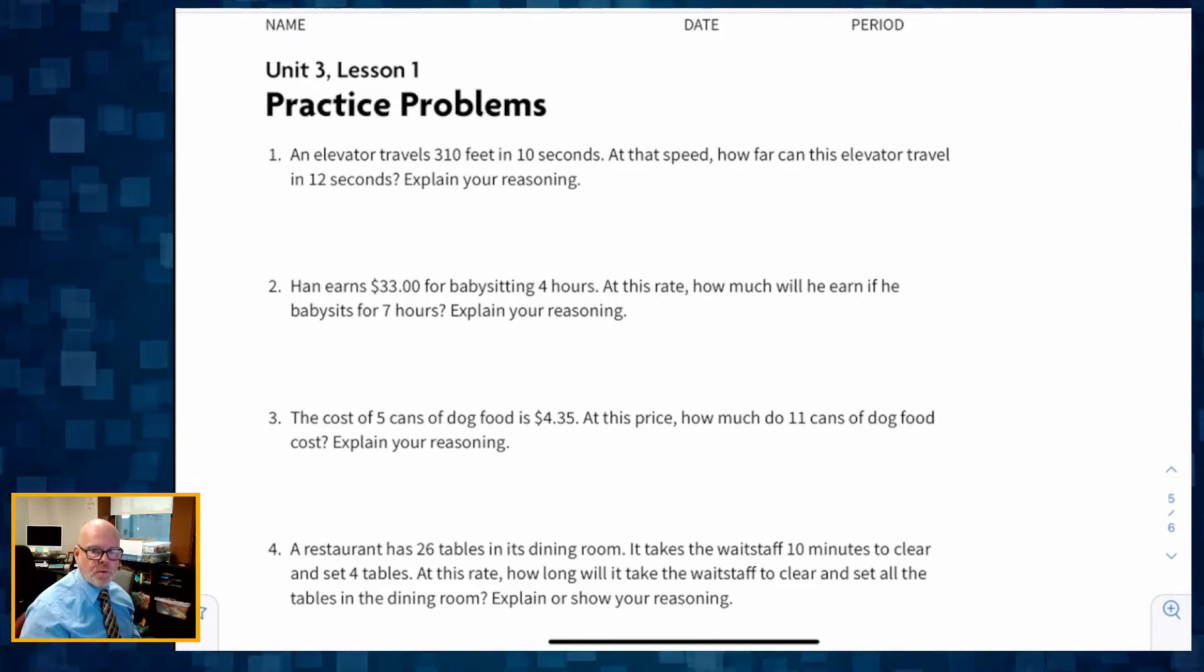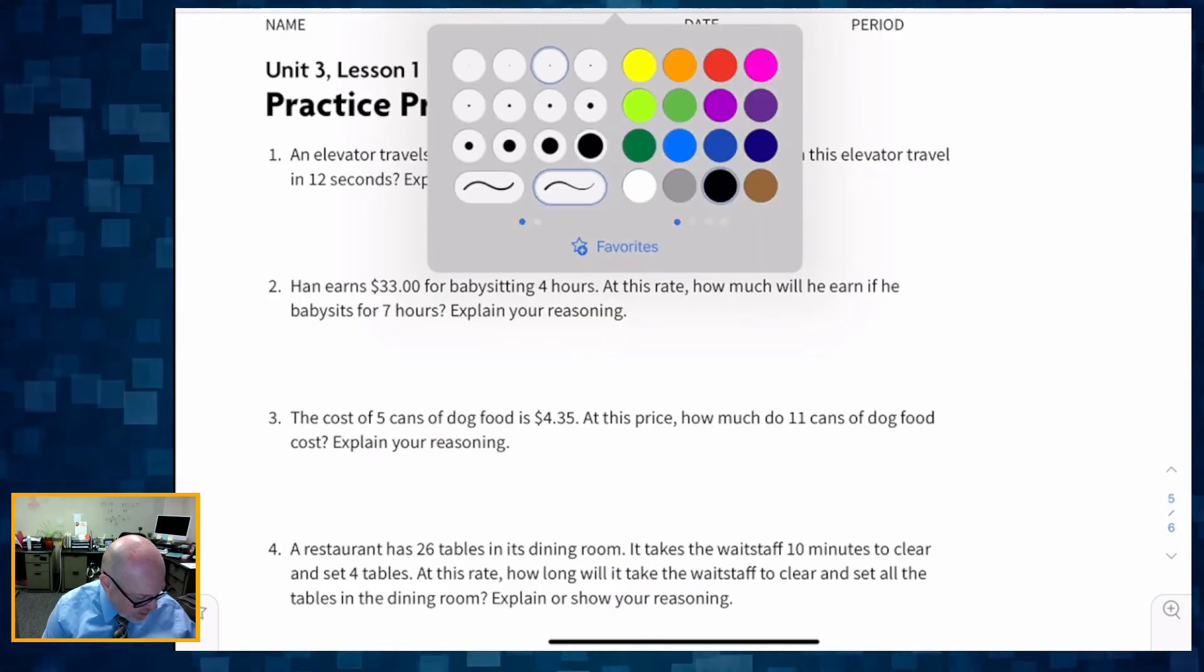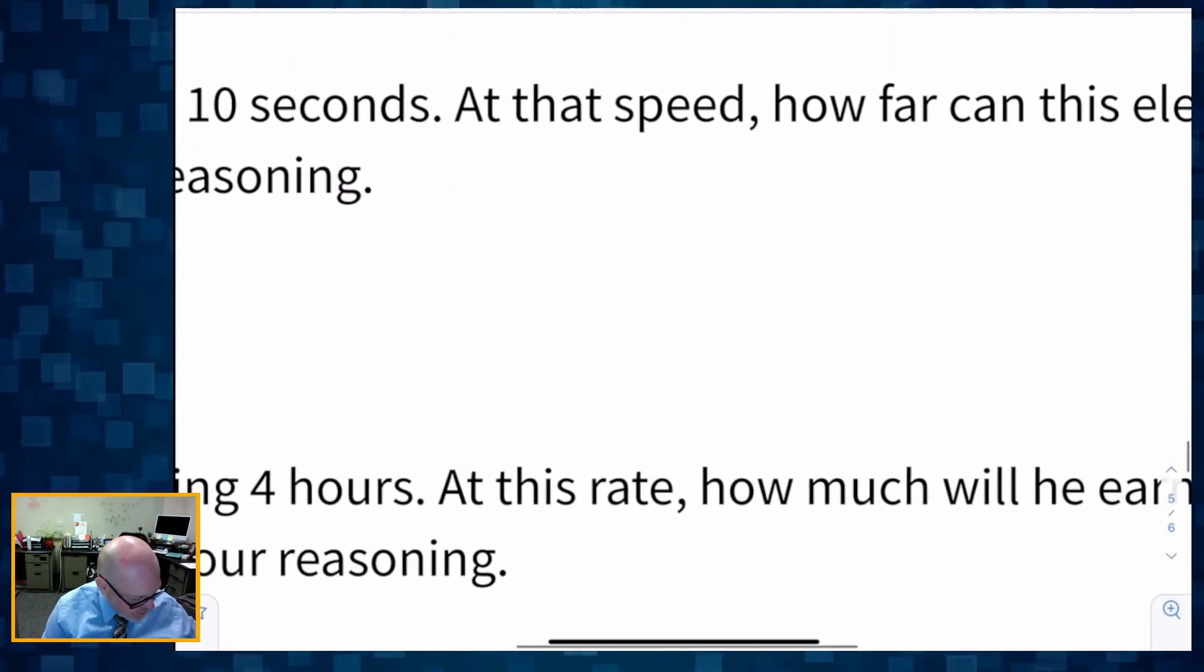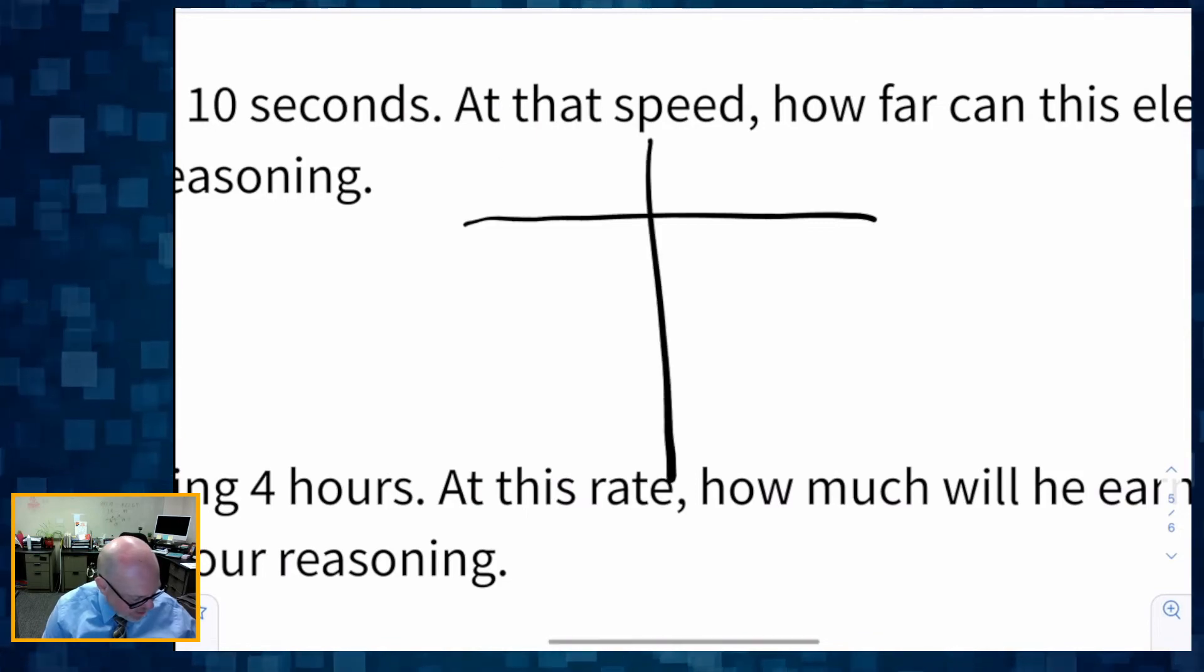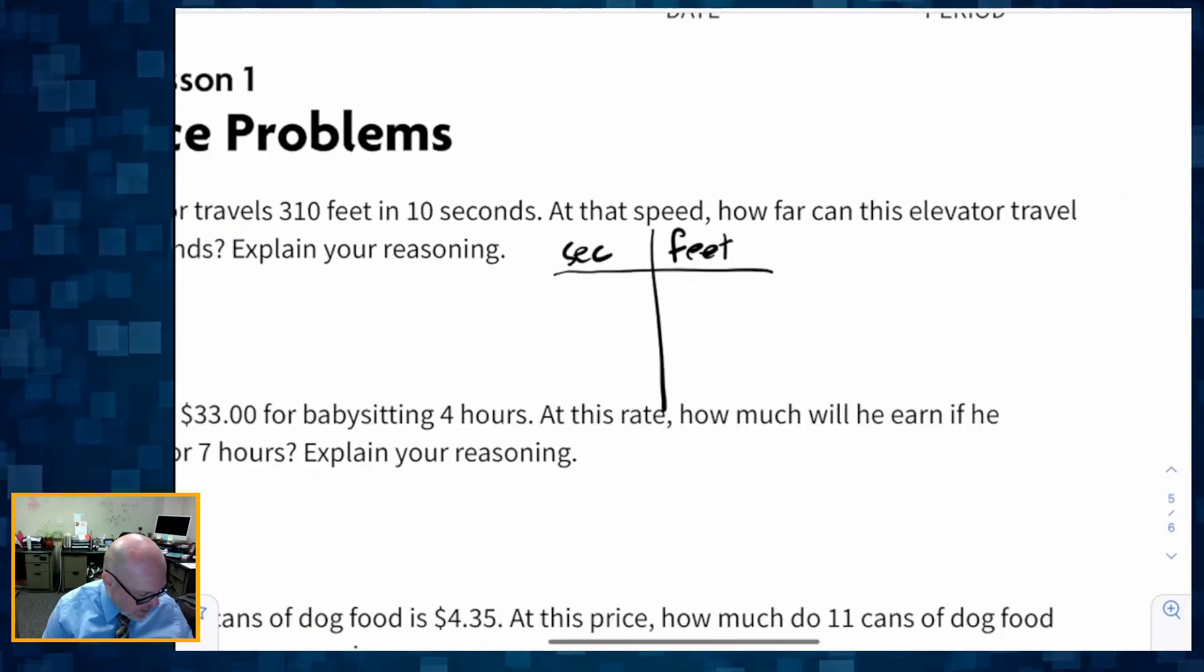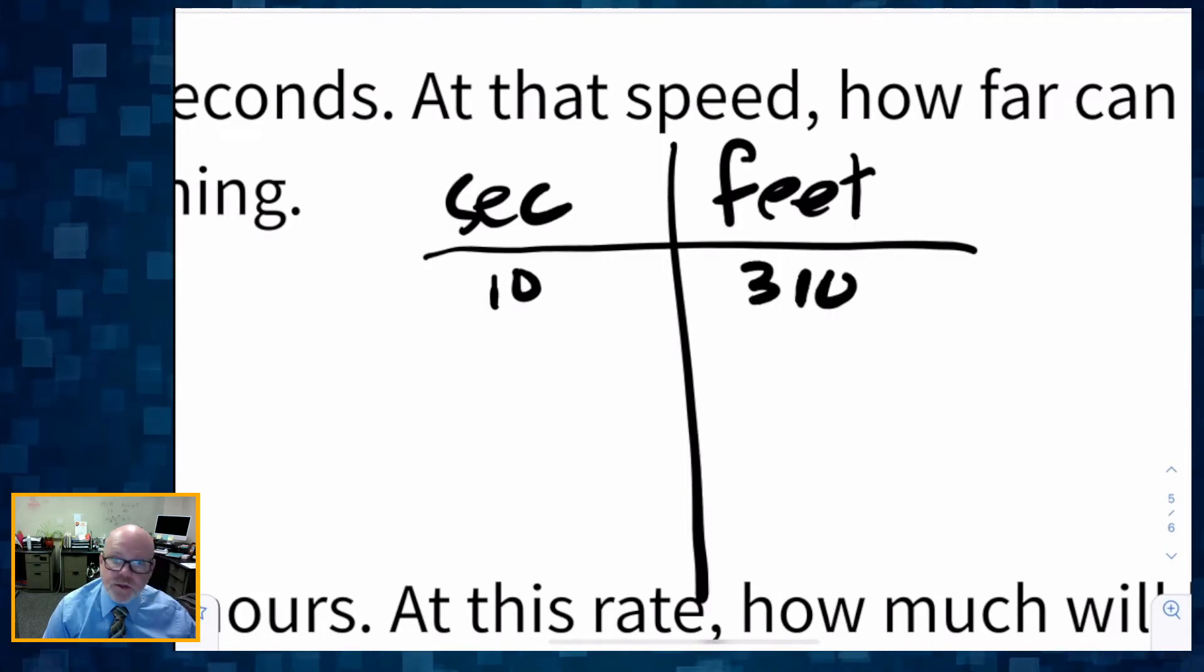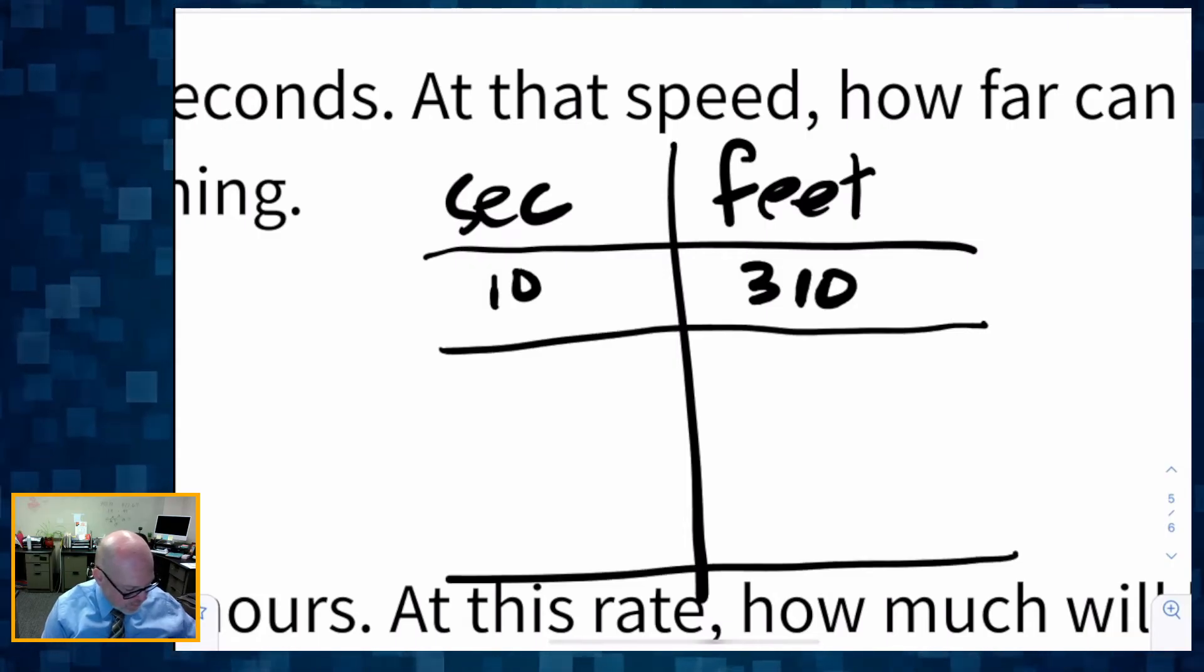So let's get into some practice here. An elevator travels 310 feet in 10 seconds. At that speed, how far can this elevator travel in 12 seconds? So this is a perfect example of where we might want to use a tape diagram. So we've got seconds and feet. And we have 10 and 310. So 10 seconds, 310 feet.